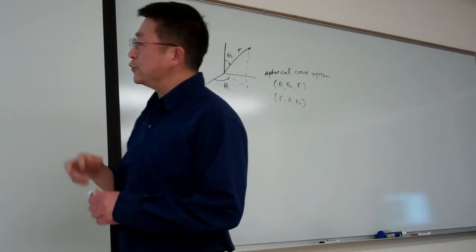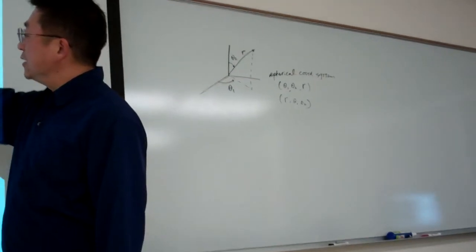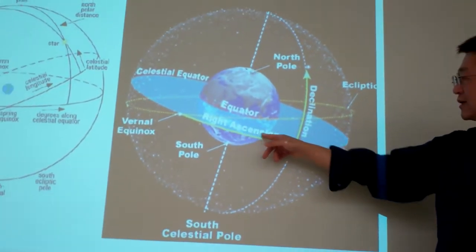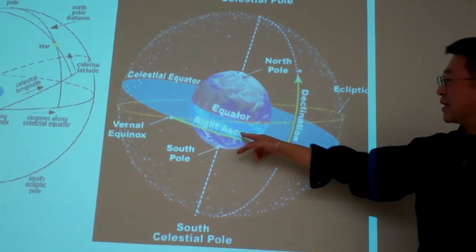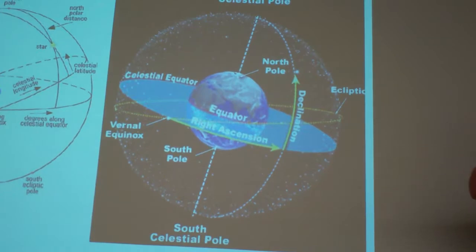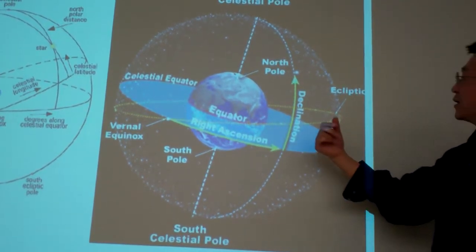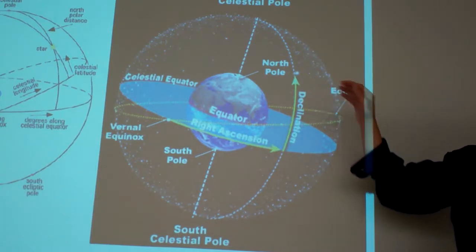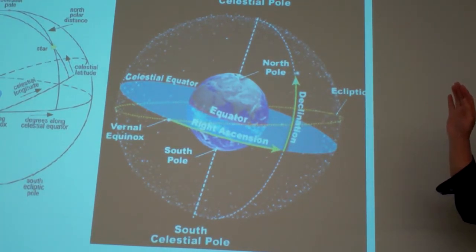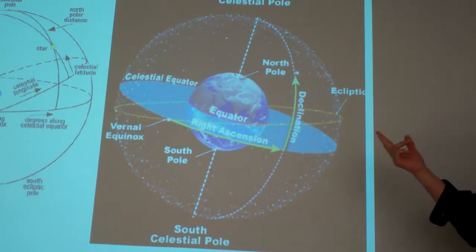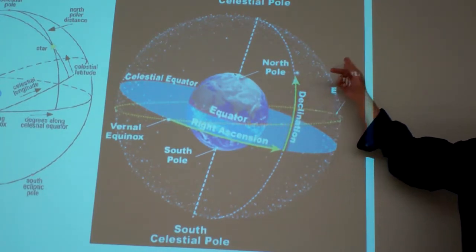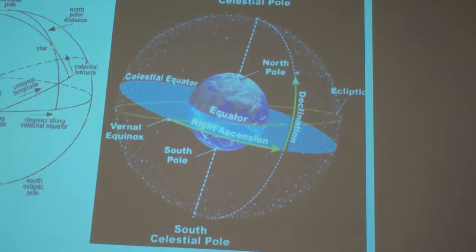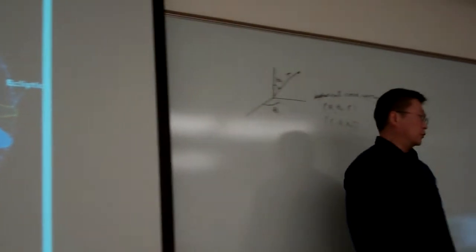In these systems, we use what's called right ascension, which is basically the longitude measurement. The other one is called declination — declination is basically the altitude measurement. Those are the two angles. Then it also depends on which location the object is at, which is how we define R. Those are the three elements we use.